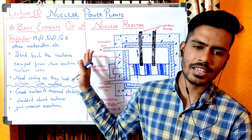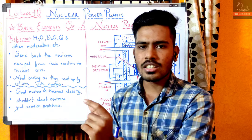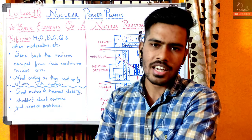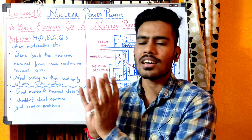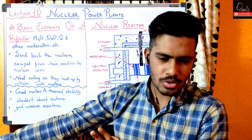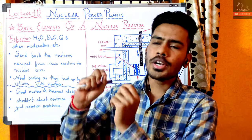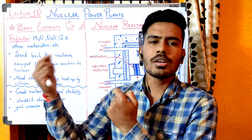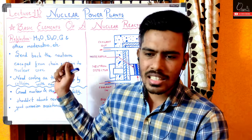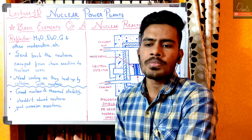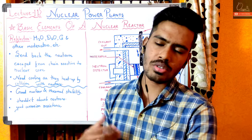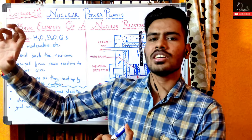Moderator से थोड़ा अलग है। Moderator क्या करता था - जो 13,200 km per second की speed वाले neutrons थे उनको 2.2 km per second यानि 2200 meter per second की speed पर ले आता था, यानि speed कम करता था। But reflector क्या करता है - उन neutrons को फिर से core की तरफ भेज देता है। इसके लिए भी process तो same ही है - जो high energy है उस energy को कम करना है।